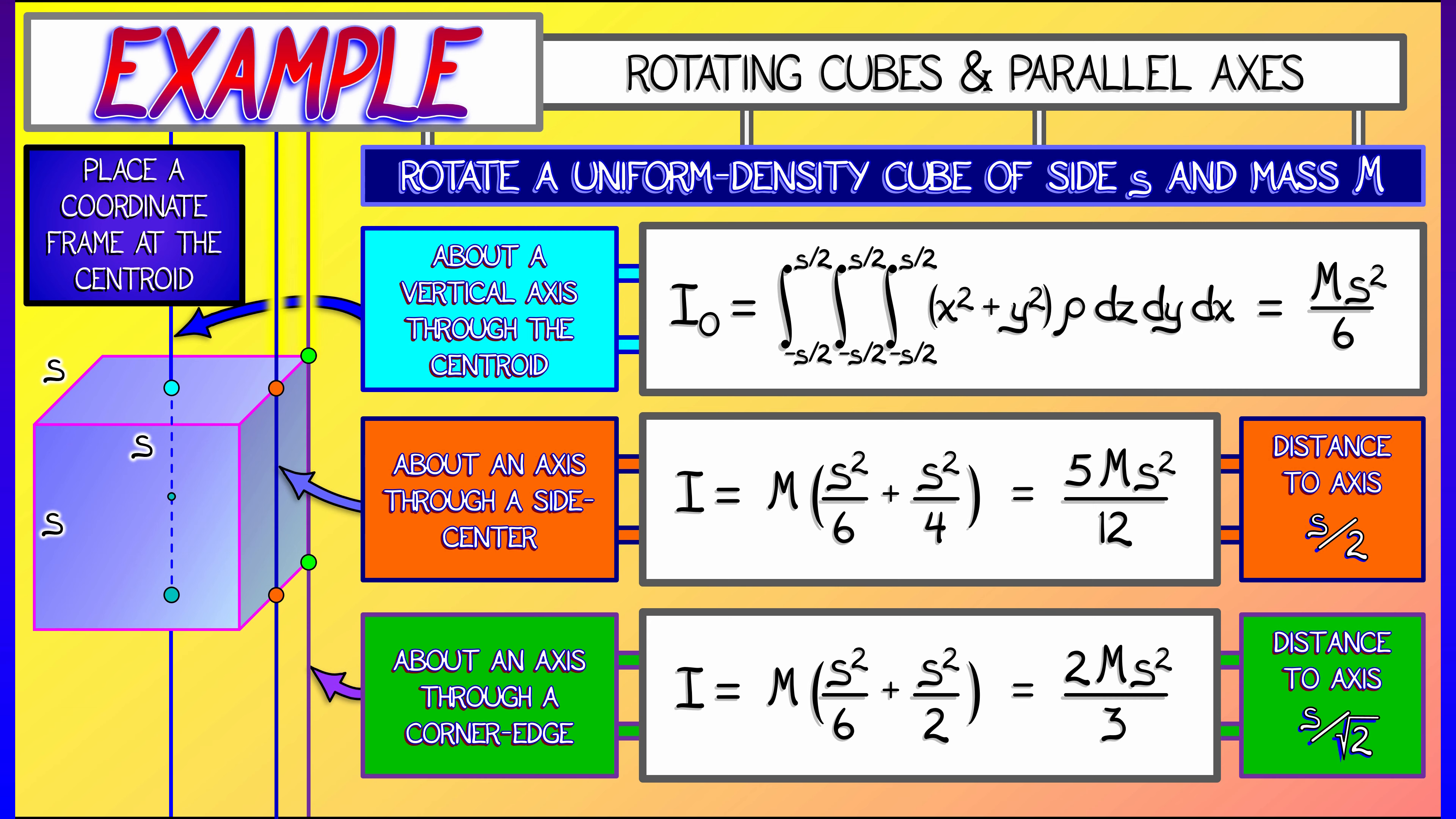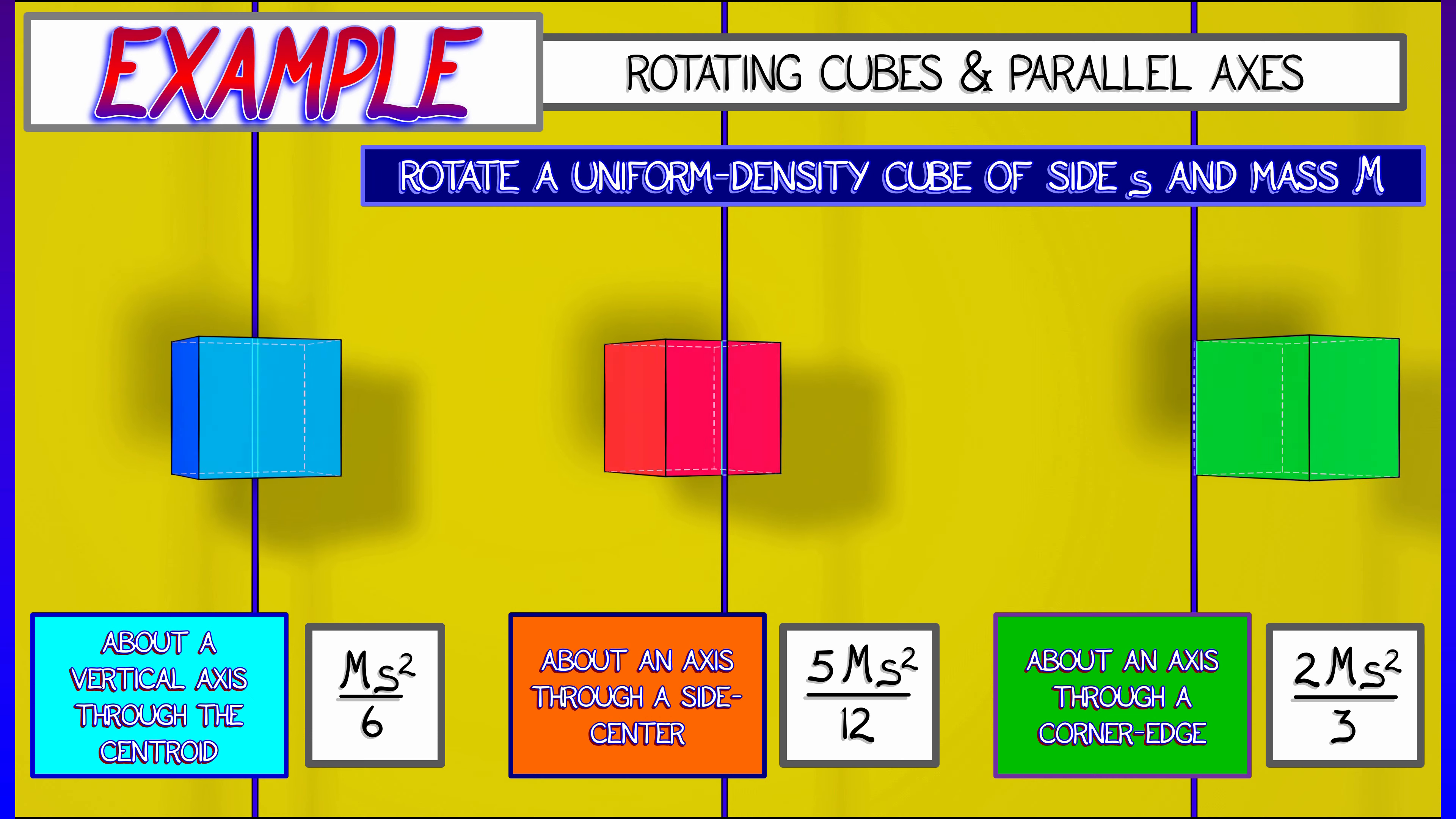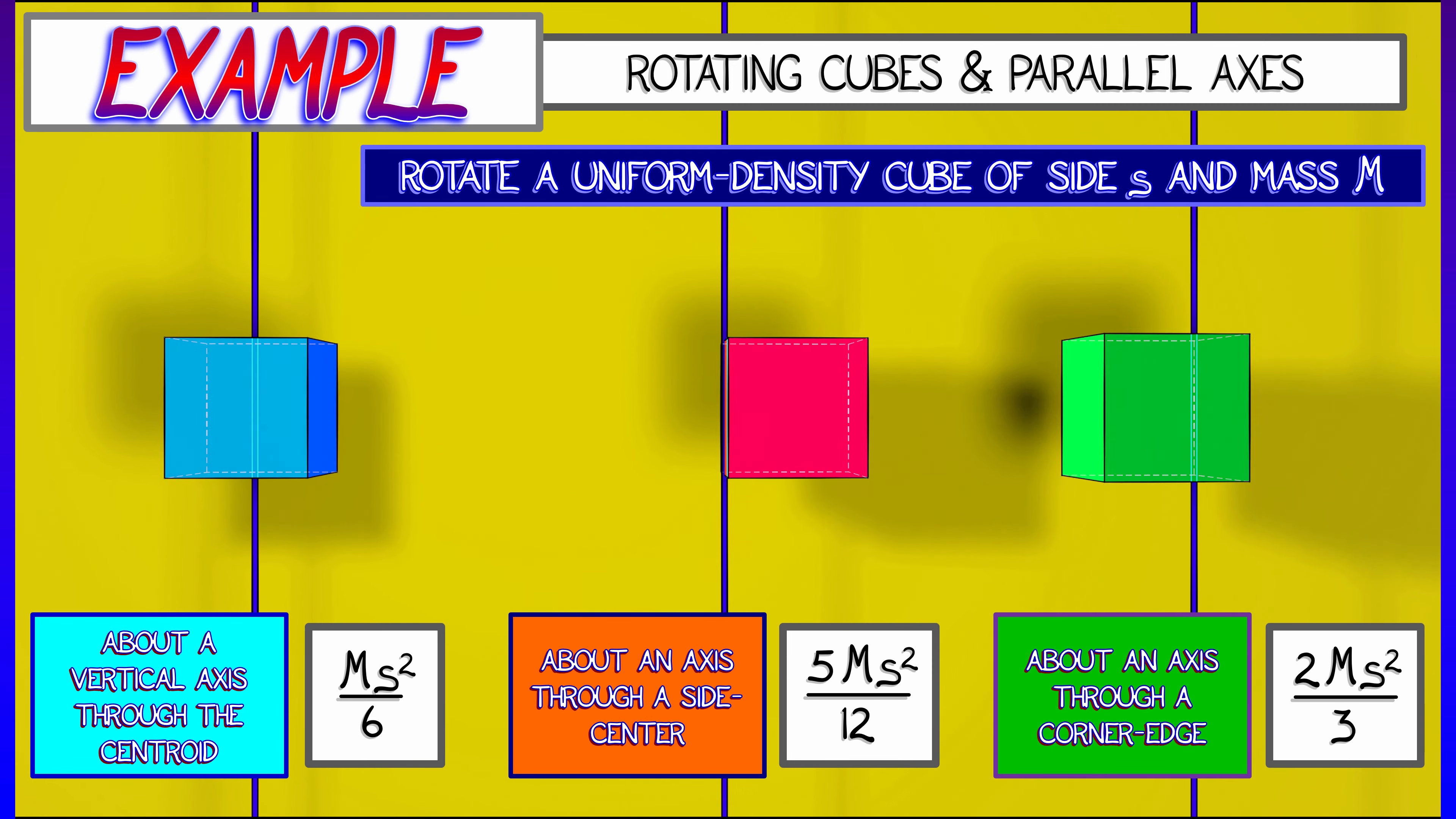Now, if we step back, take a look at what we have computed in these three different cases, and see the difference in the moment of inertia. You can see just how the parallel axis theorem is telling you how those moments are changing. As you go from rotating through the centroid to rotating about a side or rotating about a corner, the moment of inertia is going up, going way up. You can feel that viscerally, you can see it, and now you can compute it with the parallel axis theorem.